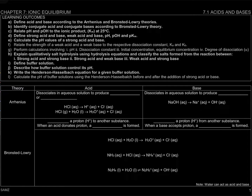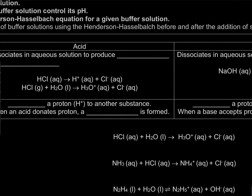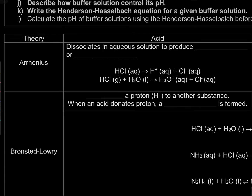We already know examples of acids — for example, lemon and HCl in solution. For bases, we know the examples are soap and sodium hydroxide. But now we're going to learn in detail based on the theories, so first we're going to look at the Arrhenius theory.